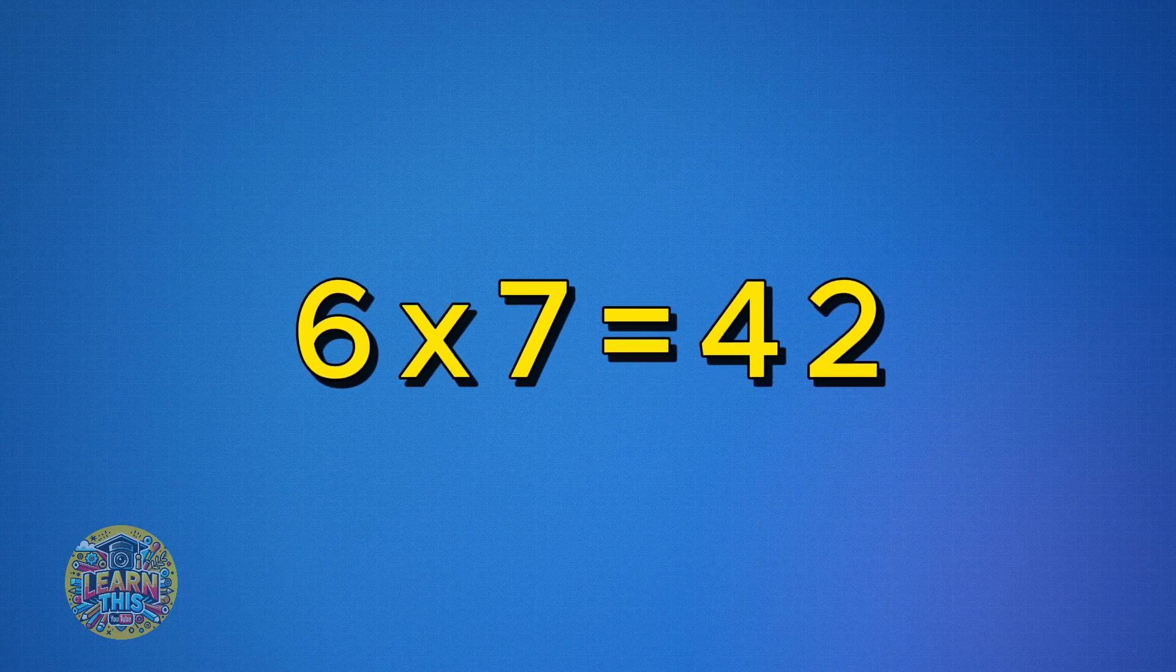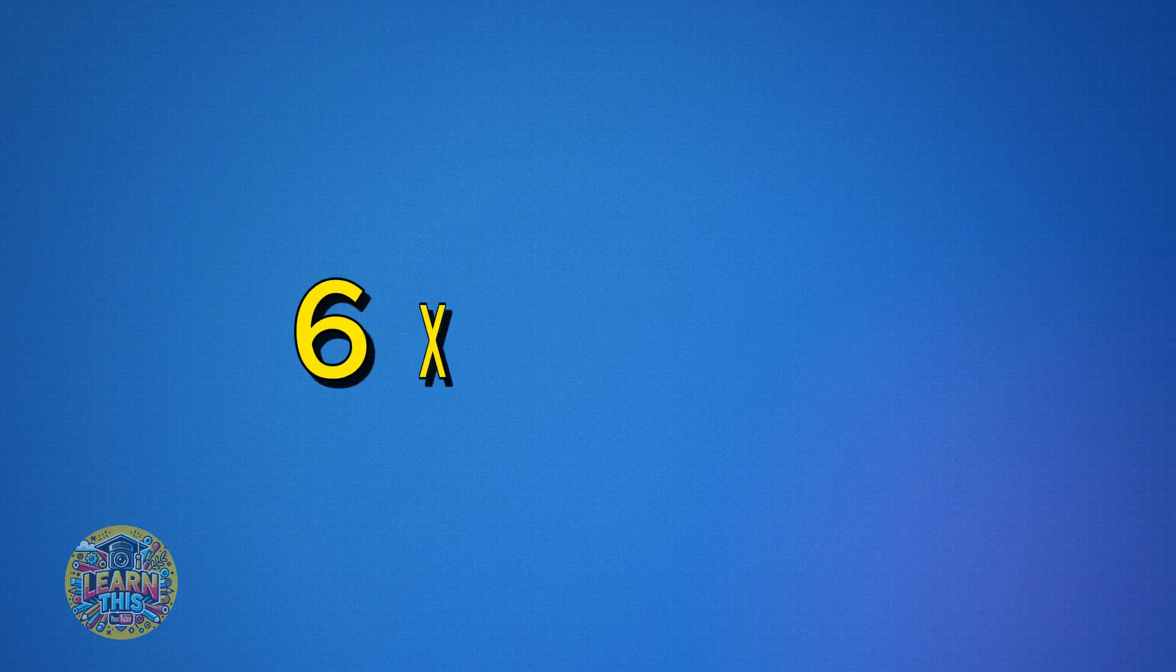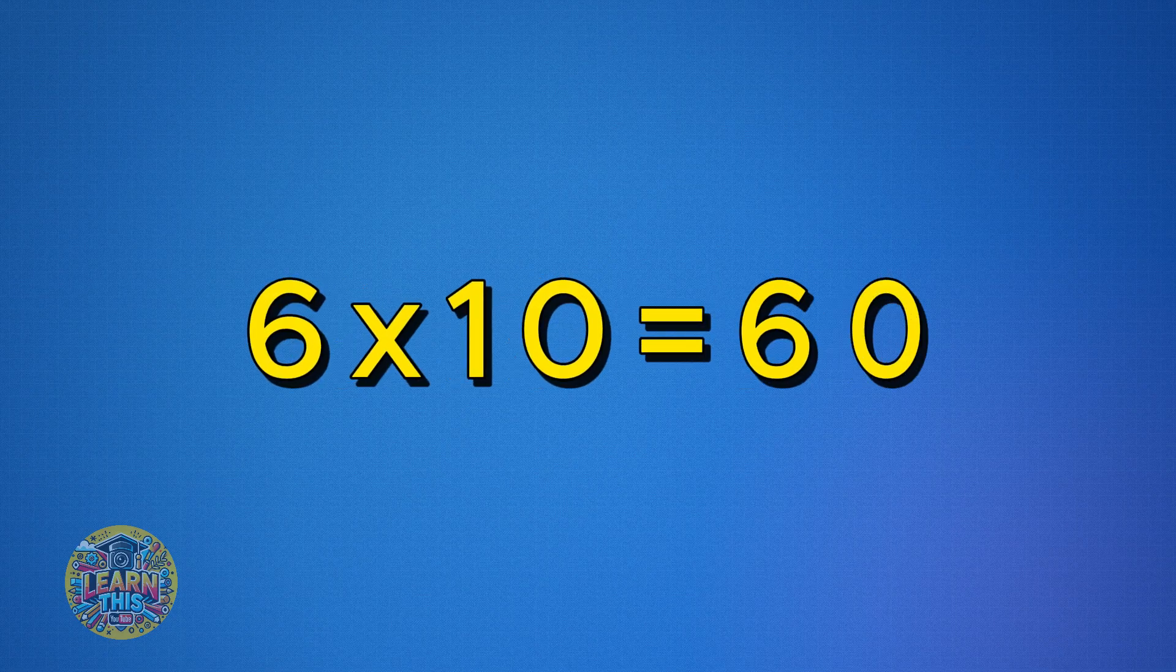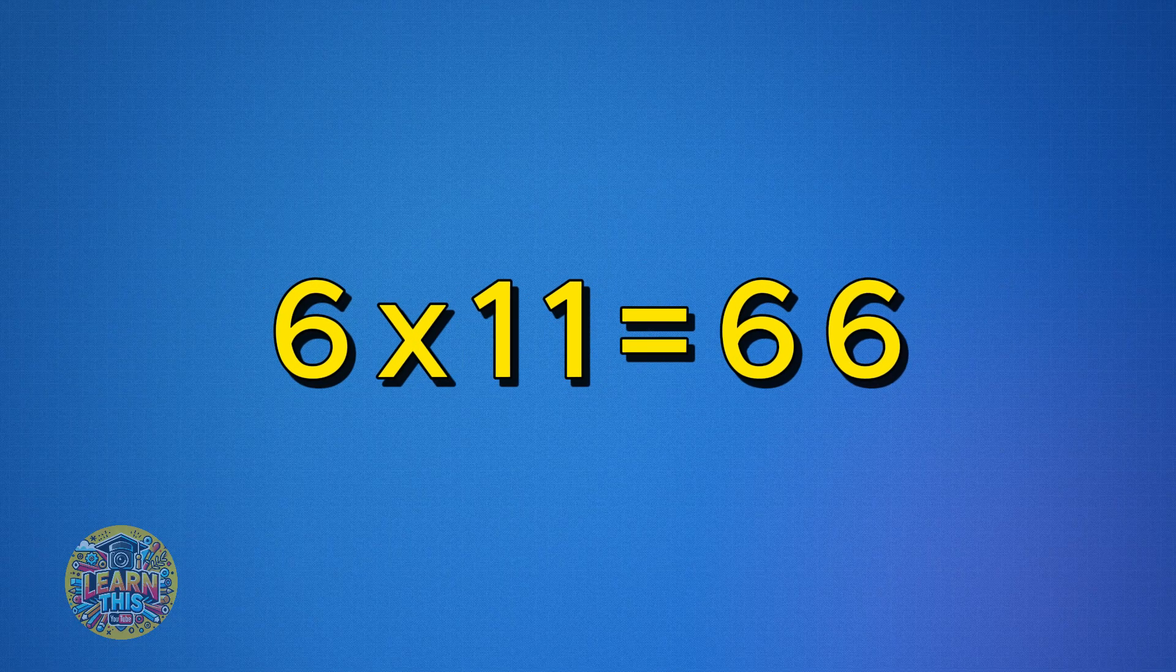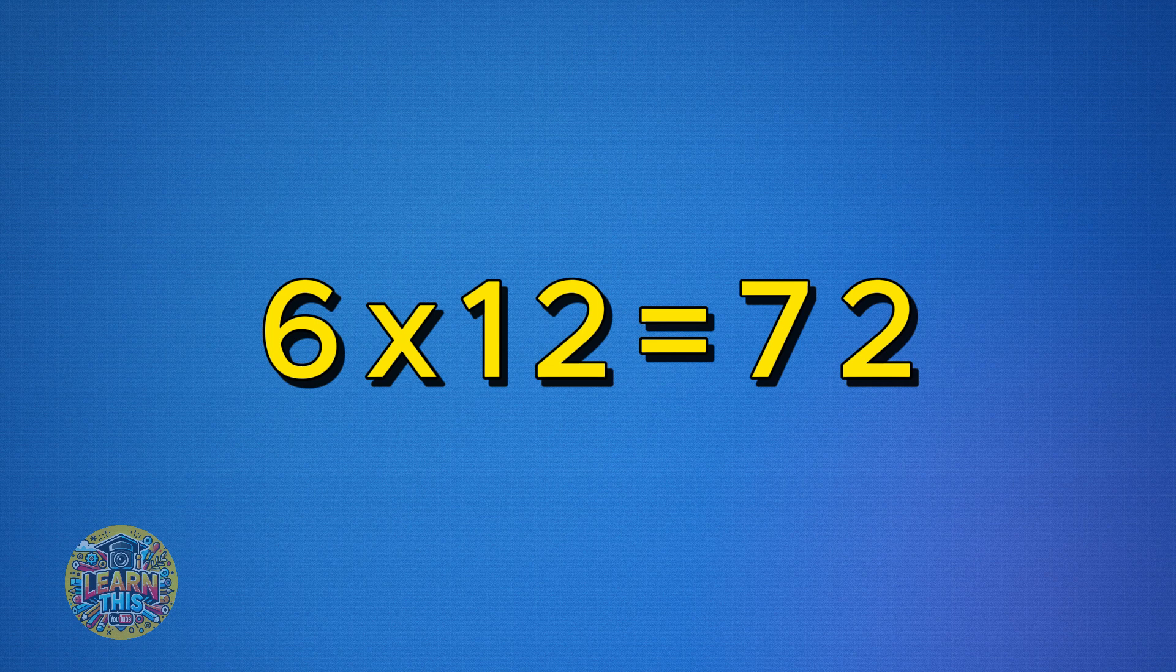Six times seven is forty-two. Six times eight is forty-eight. Six times nine is fifty-four. Six times ten is sixty. Six times eleven is sixty-six. Six times twelve is seventy-two. Great job.